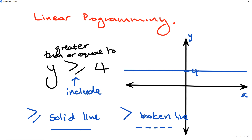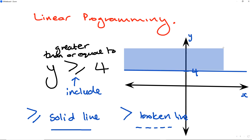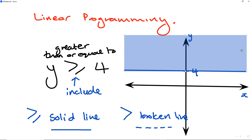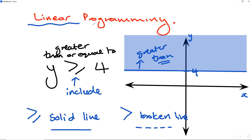From here you shade upwards, because it's greater than. Greater than means more than, so that's the whole region above the line. We're shading in the region above, which is the greater than region. That's your linear programming region there.